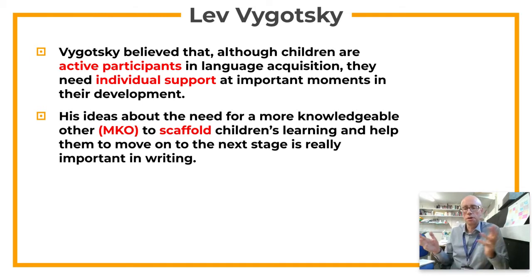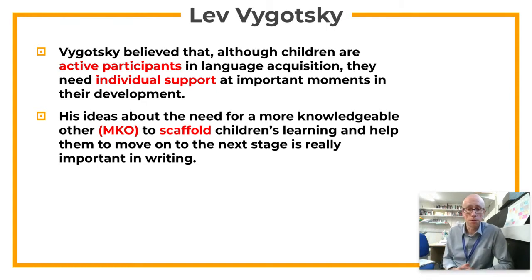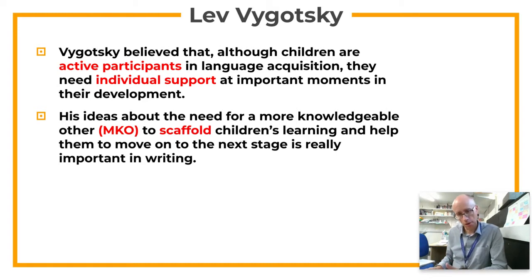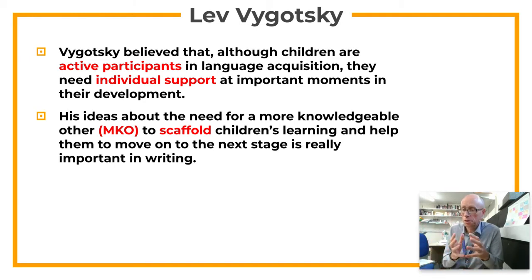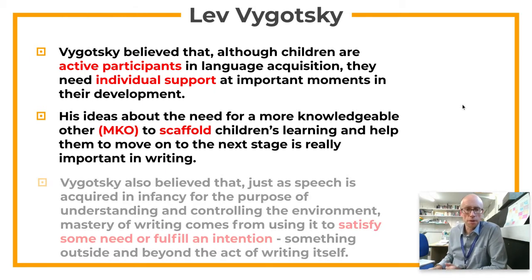He came along and was pretty revolutionary because he was suggesting that in order to learn effectively, you need to be an active participant. Students or children need individual support at important moments. And what you need is the MKO — the more knowledgeable other — to be scaffolding the children's learning and helping them move to the next stage. He also introduced the concept of the zone of proximal development, which is that area between what a child can achieve already by themselves, and what a child can only achieve with the help of an adult. The scaffolding pushes children through the zone of proximal development so that they become more independent learners.